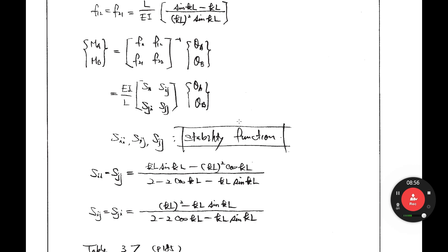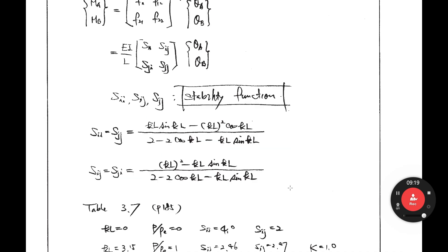So P is included here. Where is P in this equation? It is in K, right? What is K? K equals the square root of P over EI. That is K. So K includes P, and this stability function considers P. This is the stiffness matrix considering P — it is called the stability function.